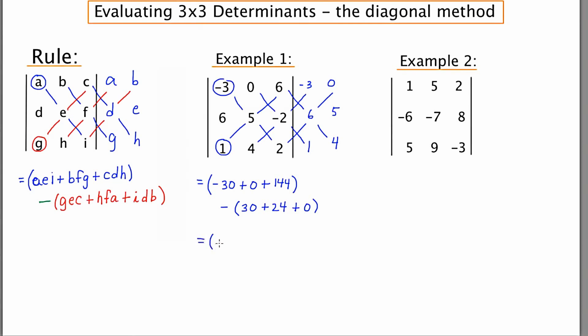Now to clean up what I have, negative 30 plus zero plus 144 is 114 minus, and then everything in the second set of parentheses is 54. And 114 minus 54 is 60.